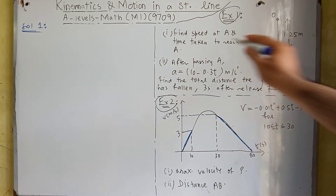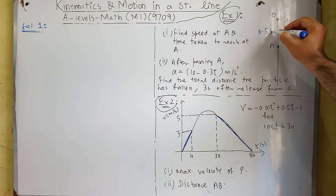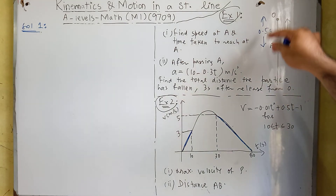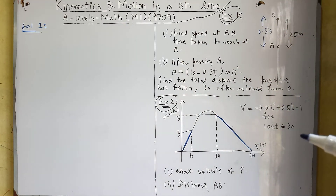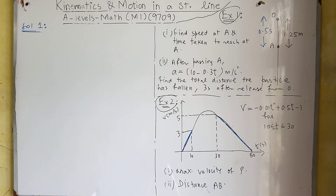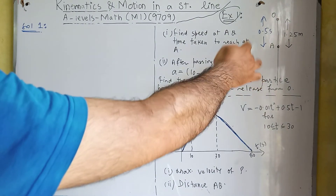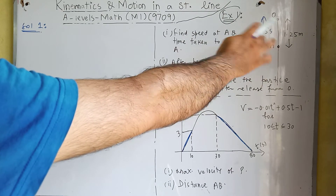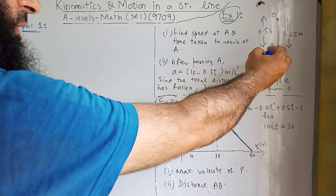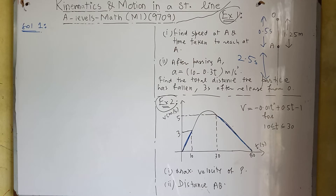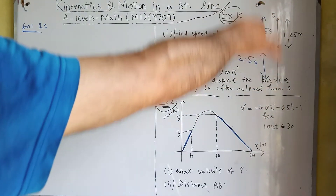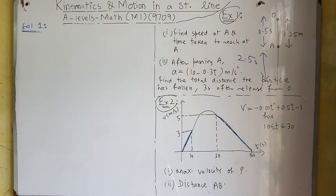In part one, we calculated the time to reach A as 0.5 seconds. The particle took 0.5 seconds from O to A and covered 1.25 meters. We need to find the total distance after 3 seconds, so we need to calculate the distance during the next 2.5 seconds, since 2.5 + 0.5 = 3 seconds.